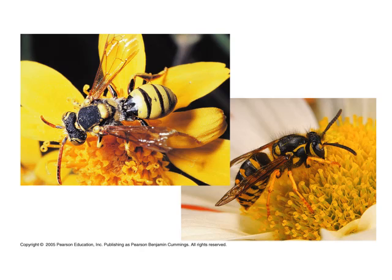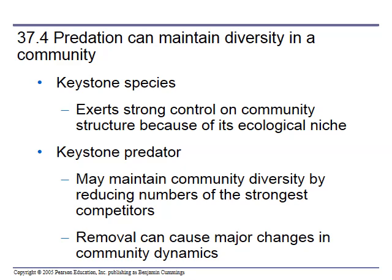Müllerian mimicry is when two unpalatable species mimic each other. Even though they're both unpalatable, animals learn faster not to eat them if they both look alike. In this example, both species look alike and are both unpalatable.